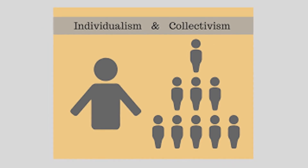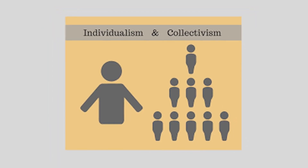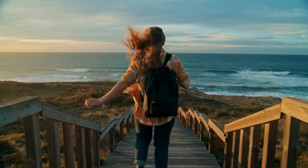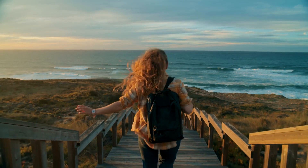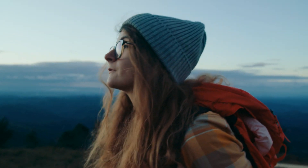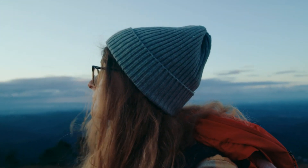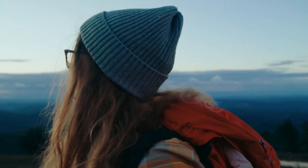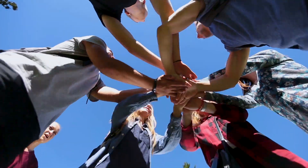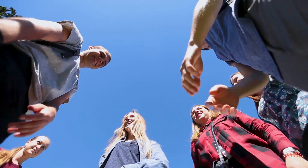The second dimension was individualism versus collectivism. This reflects the degree to which individuals prioritize their own interests versus the interests of the collective group. Societies that are more individualistic tend to value personal freedom, autonomy, and individual achievements — for example, many countries in the West — while collectivist societies emphasize group harmony, cooperation, and interdependence — for example, countries in the East.